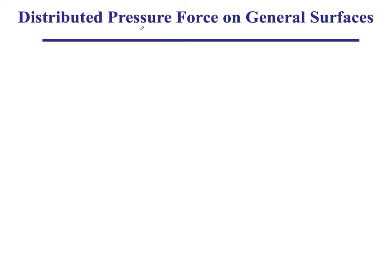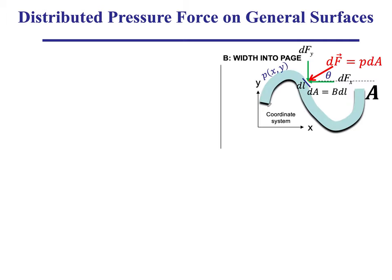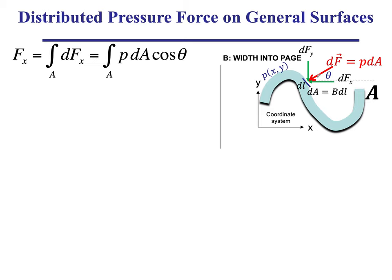We go back to the distributed pressure force on general surfaces. Consider a surface with area A and a pressure distribution P(x, y) acting on it. We know that pressure acts compressive and perpendicular, so for any elemental area DA of length DL with depth B into the page, there is a force F due to the pressure which is simply pressure times area — that is the basic premise of the pressure force.